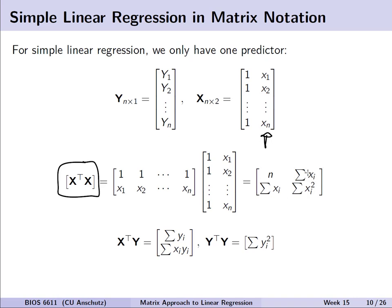We can also note that if we take X-transpose times Y, we end up with our other summary statistics of interest: the sum of Y and the sum of X times Y. And X-transpose Y is really just the sum of our Y outcome squared.